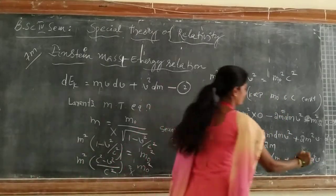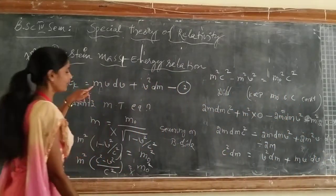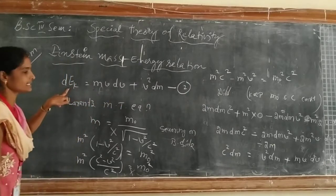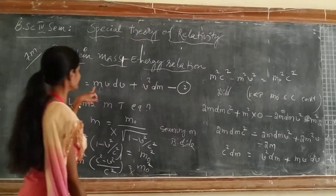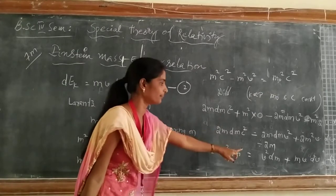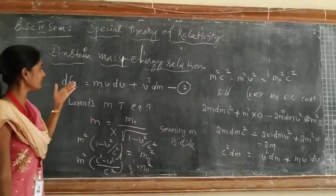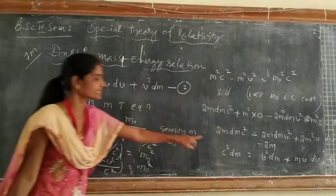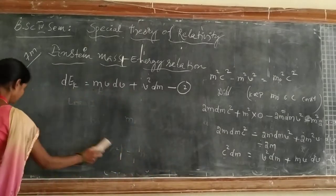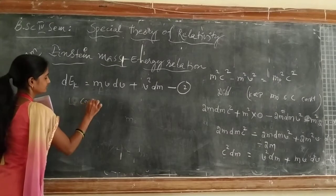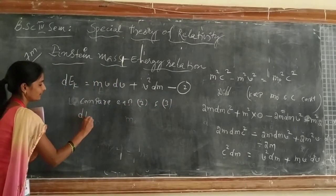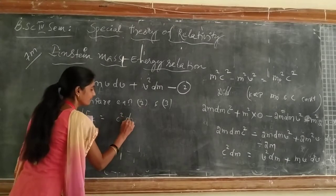Now we compare equation number 2 and equation number 3. The left-hand side M·v·dv + v²·dm is the same in both equations. Equating them, we get dEk = c²·dM.